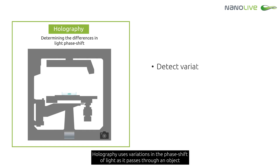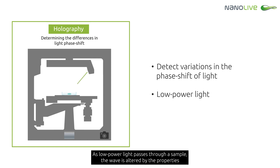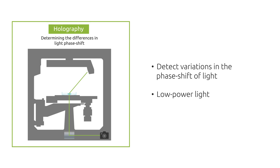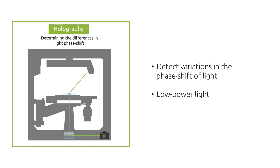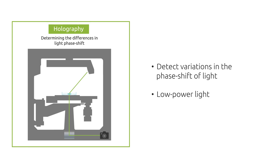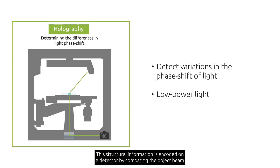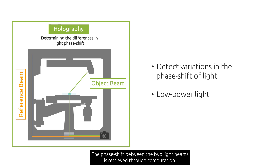Holography uses variations in the phase shift of light as it passes through an object to produce quantitative images. As low-power light passes through a sample, the wave is altered by the properties of the sample's internal structure. Cellular structures and organelles interact with light in different ways, meaning they can be differentiated by their refractive index values. This structural information is encoded on a detector by comparing the object beam with a reference beam, and the phase shift between the two is retrieved through computation based on the recorded hologram.